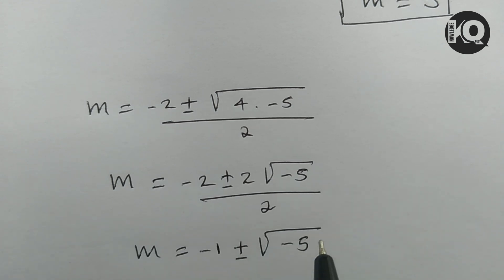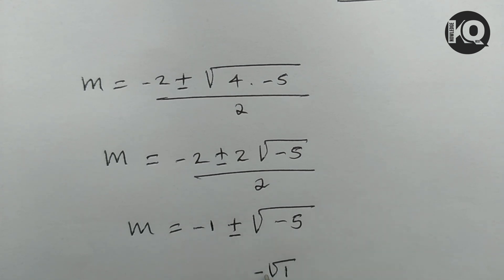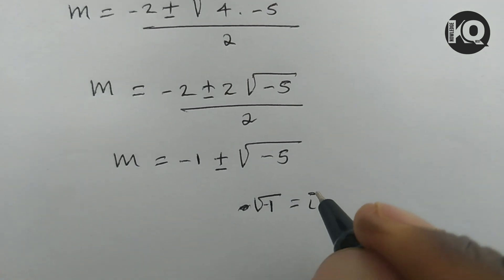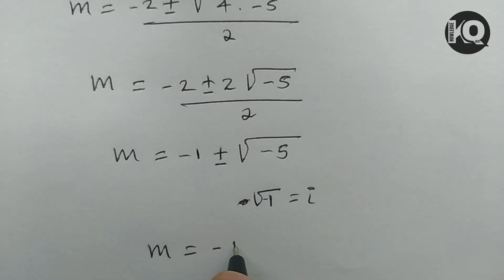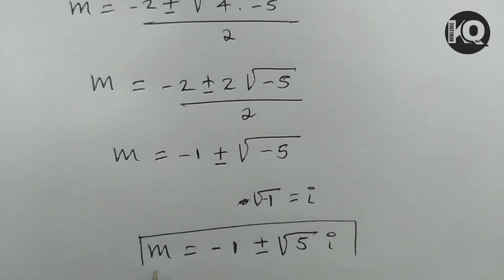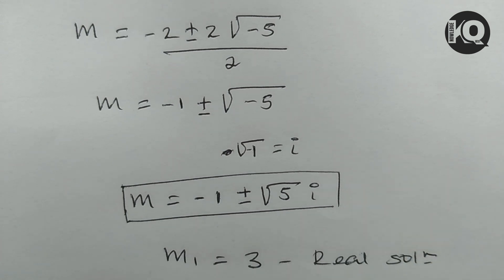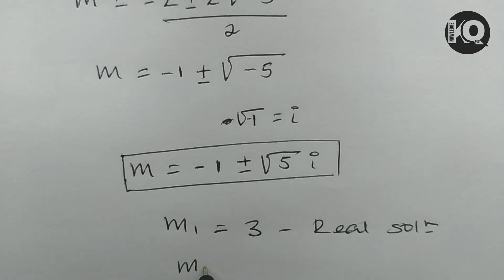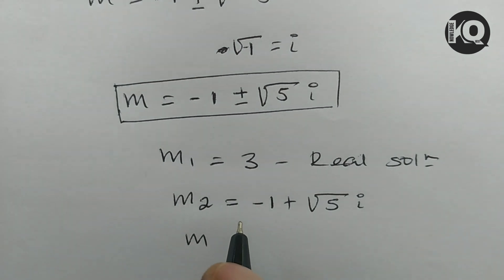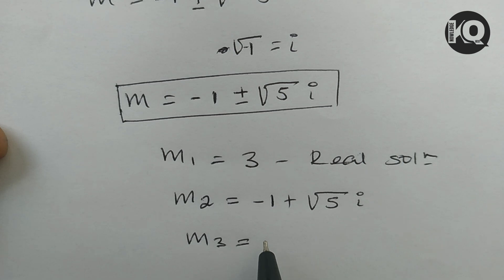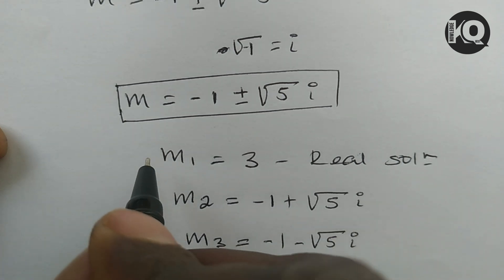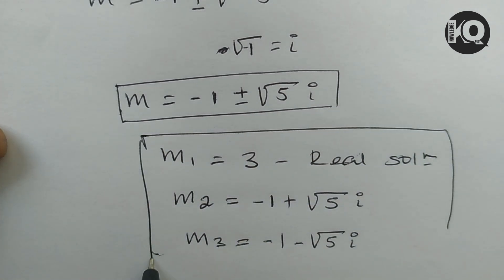Since the square root of minus 1 equals i, we have m equals minus 1 plus or minus the square root of 5 times i. So the three possible solutions to the equation are: m₁ equals 3, m₂ equals minus 1 plus the square root of 5 times i, and m₃ equals minus 1 minus the square root of 5 times i.